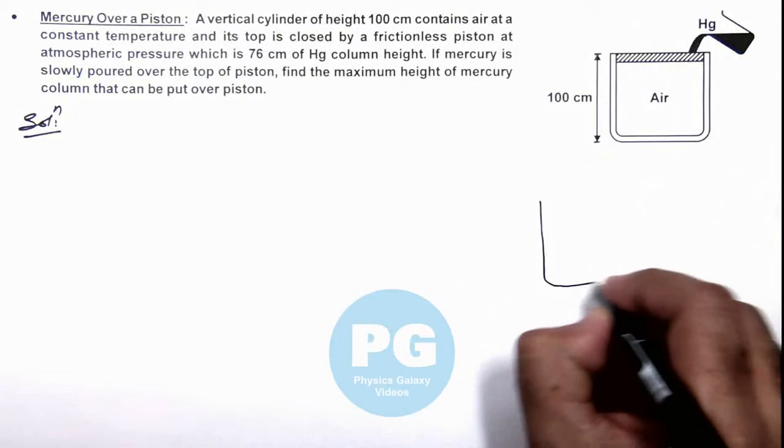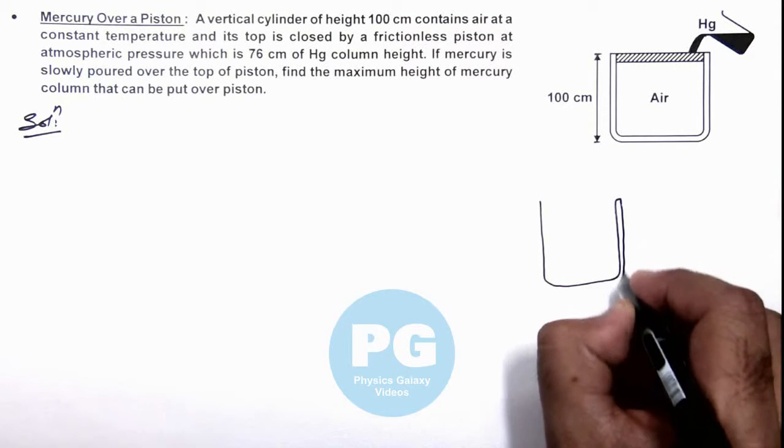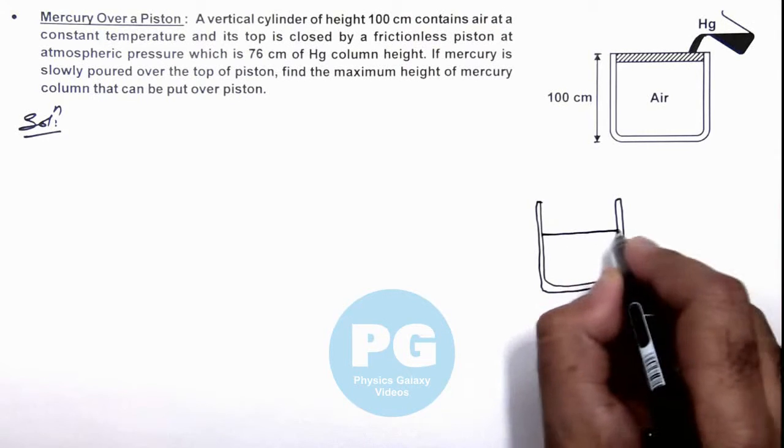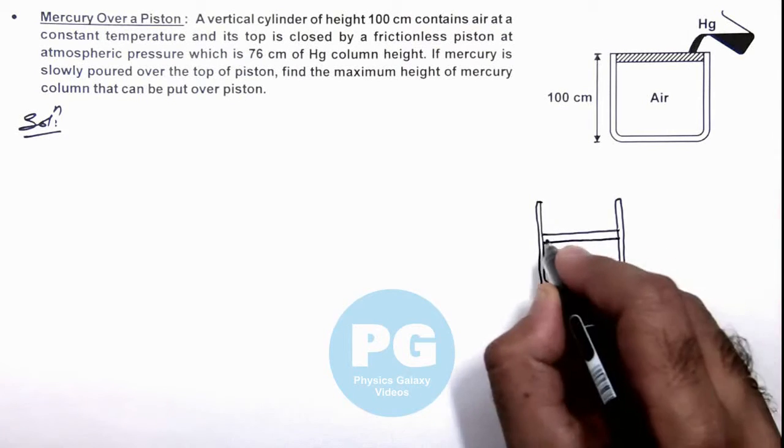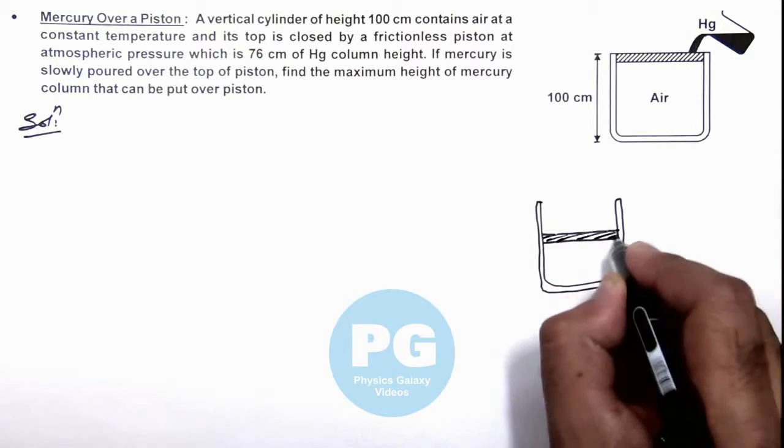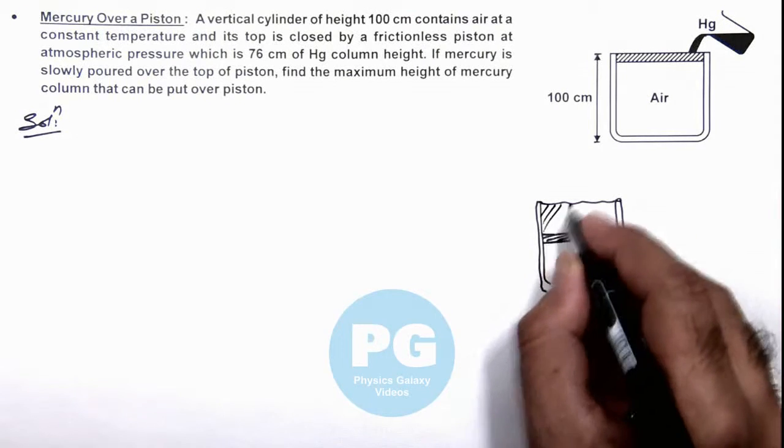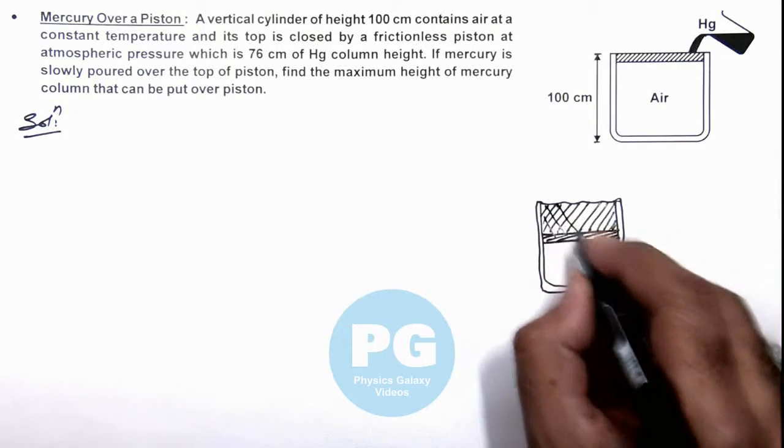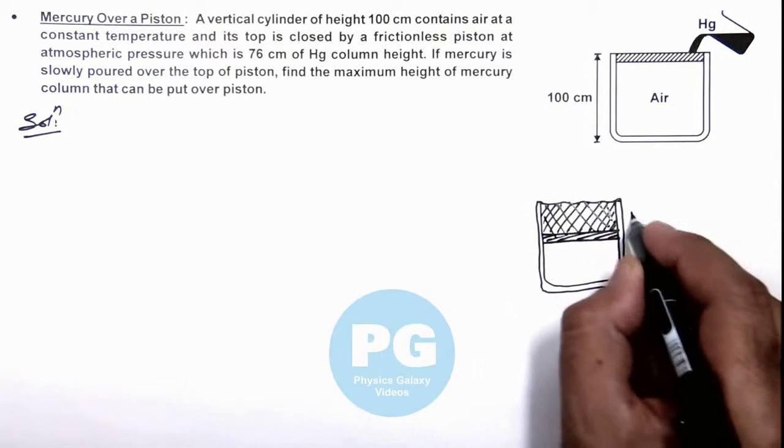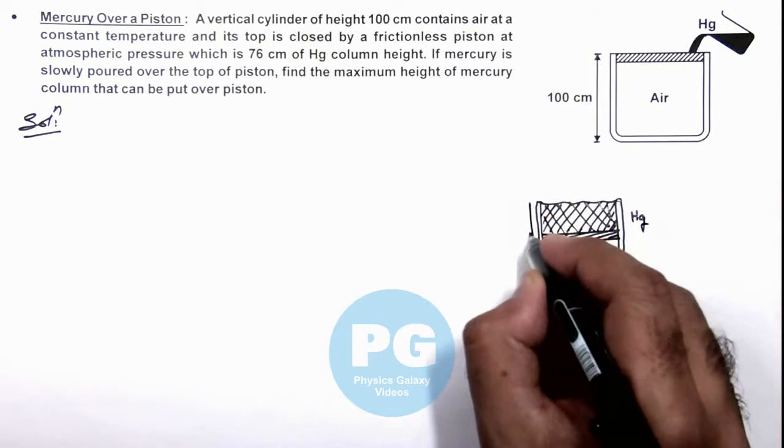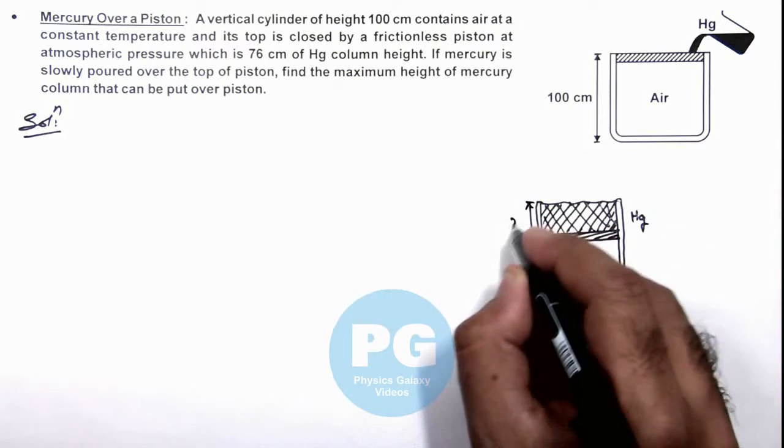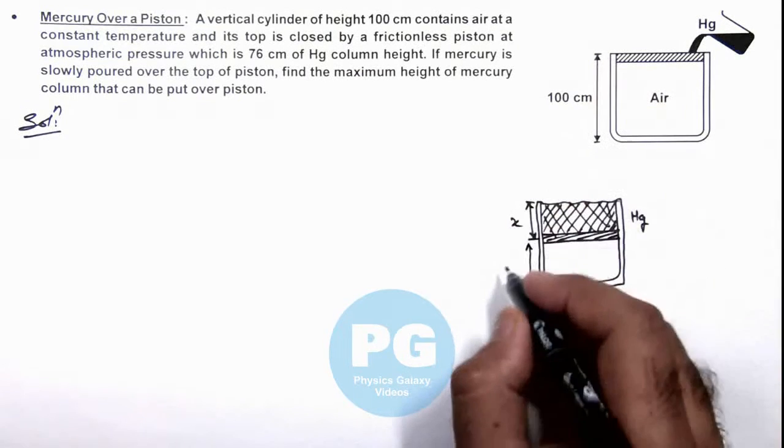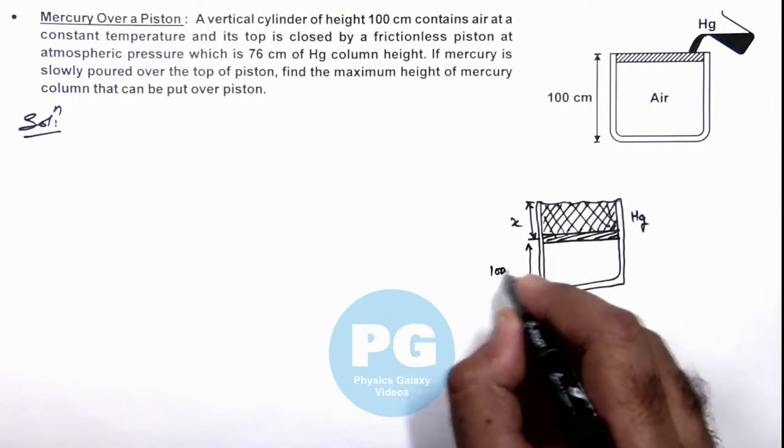If we redraw the picture, it will look like this, where we can say if the piston reaches this position and this whole level is filled with mercury, then the mercury is up to a height x. The volume of this air will reduce from 100 centimeters to 100 minus x.